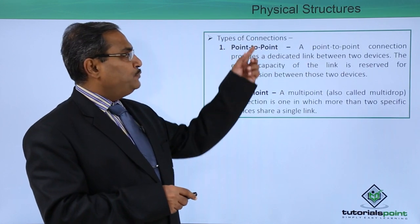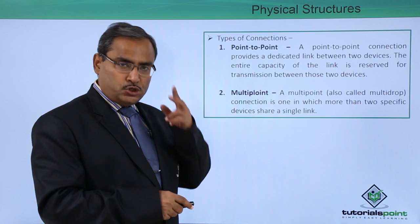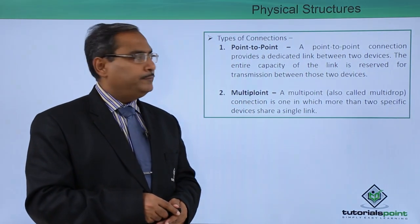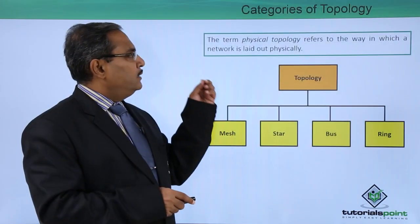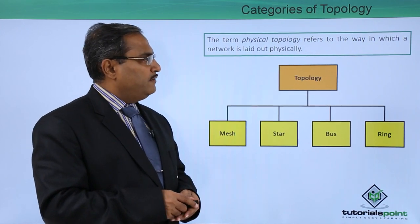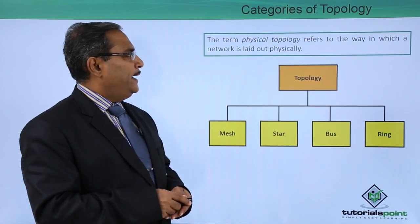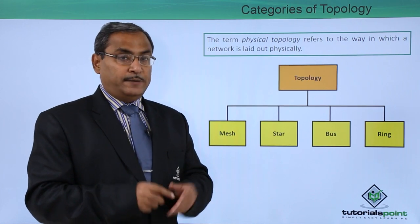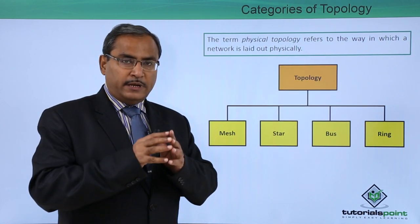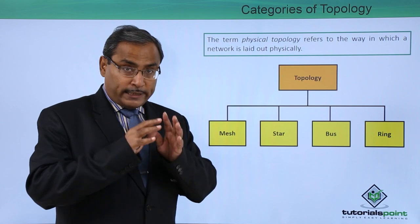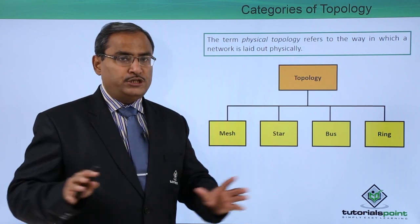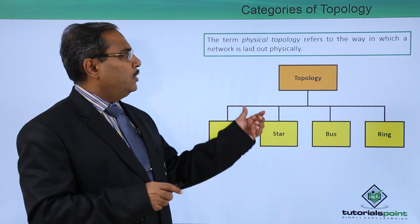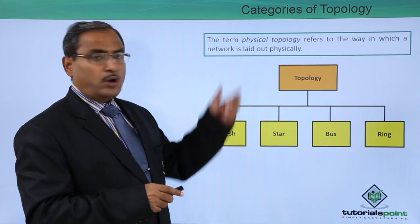So we had the two types of connections: point-to-point and multipoint. The term physical topology refers to the way in which a network is laid out physically — how the network has been laid out, what is the topology of that layout.